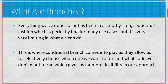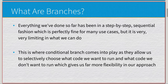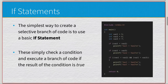Everything we've done so far has basically been in a step-by-step sequential fashion, which is fine for a lot of use cases. But eventually we want to run code only under certain conditions, jump around, and have blocks of code dependent on variables — and we'll learn how to do that here. The simplest way to select a branch is with if statements: look at a condition, and if it's true, run the code; otherwise move on.